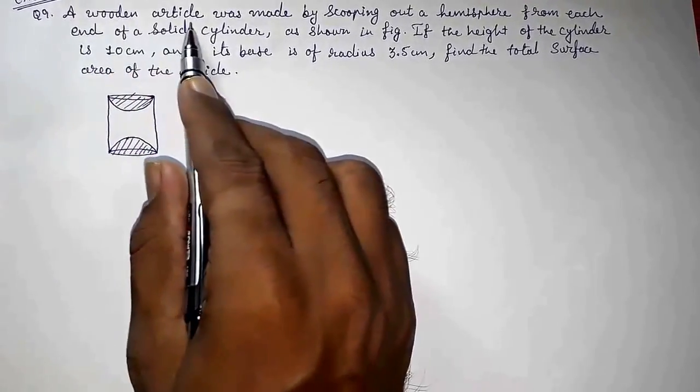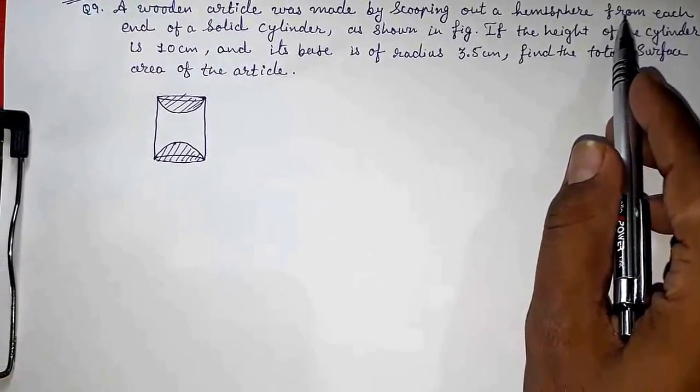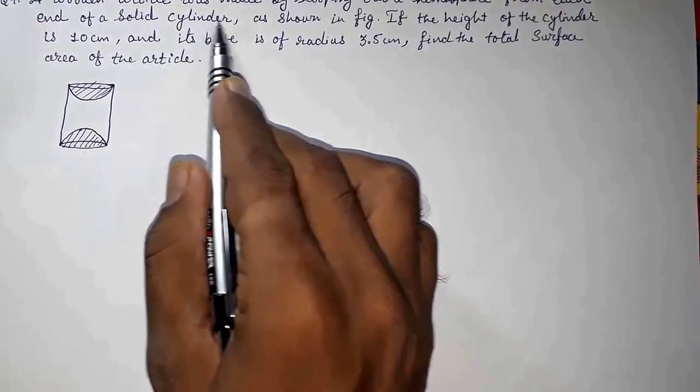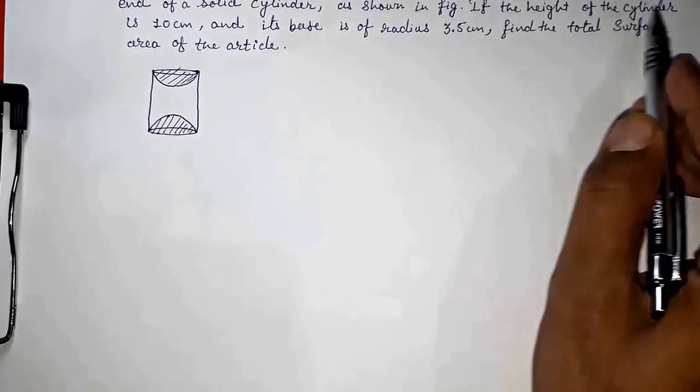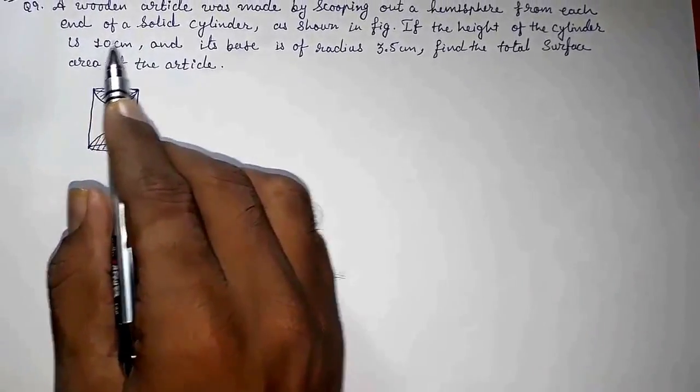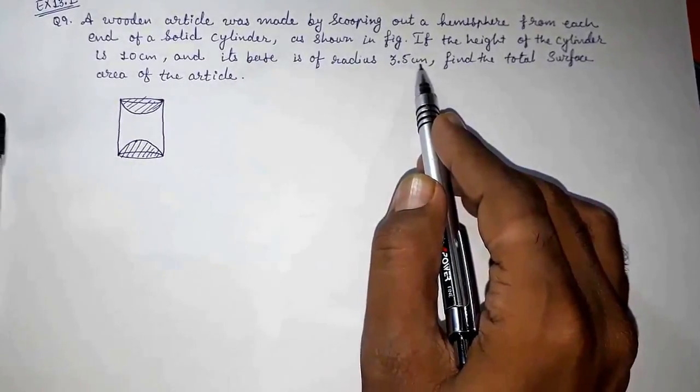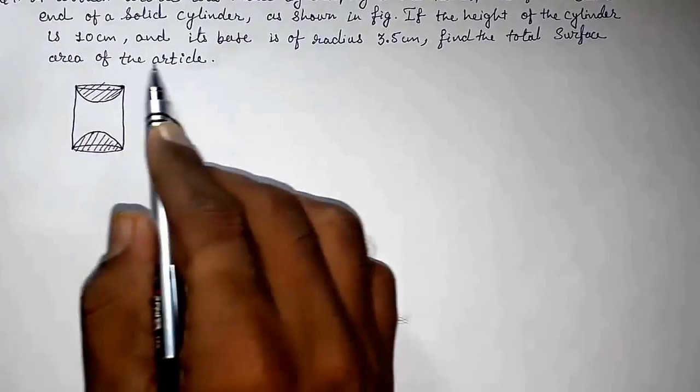A wooden article was made by scooping out a hemisphere from each end of a solid cylinder as shown in the figure. If the height of the cylinder is 10 cm and its base is of radius 3.5 cm, find the total surface area of the article.